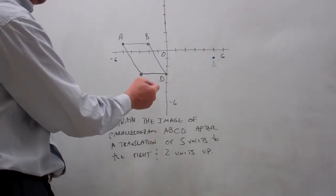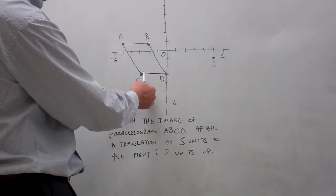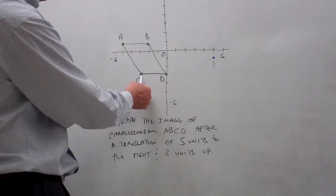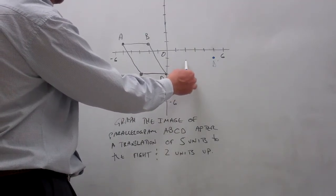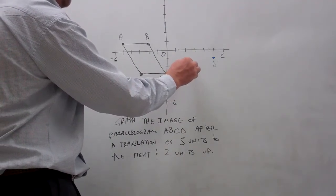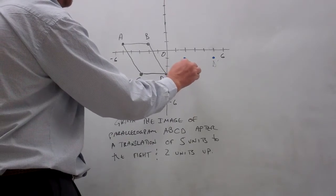Let's do the same thing with point C. Right now point C has coordinates of negative 3, negative 3. When we move it five units to the right, it's at 2, and then two units up puts it at negative 1. We'll call that point C prime.